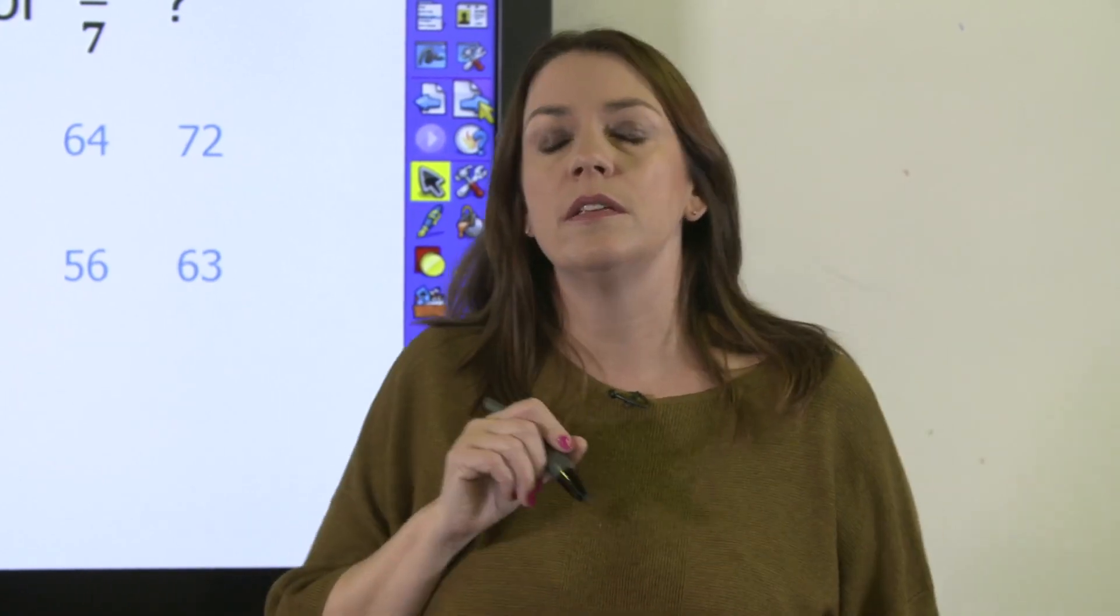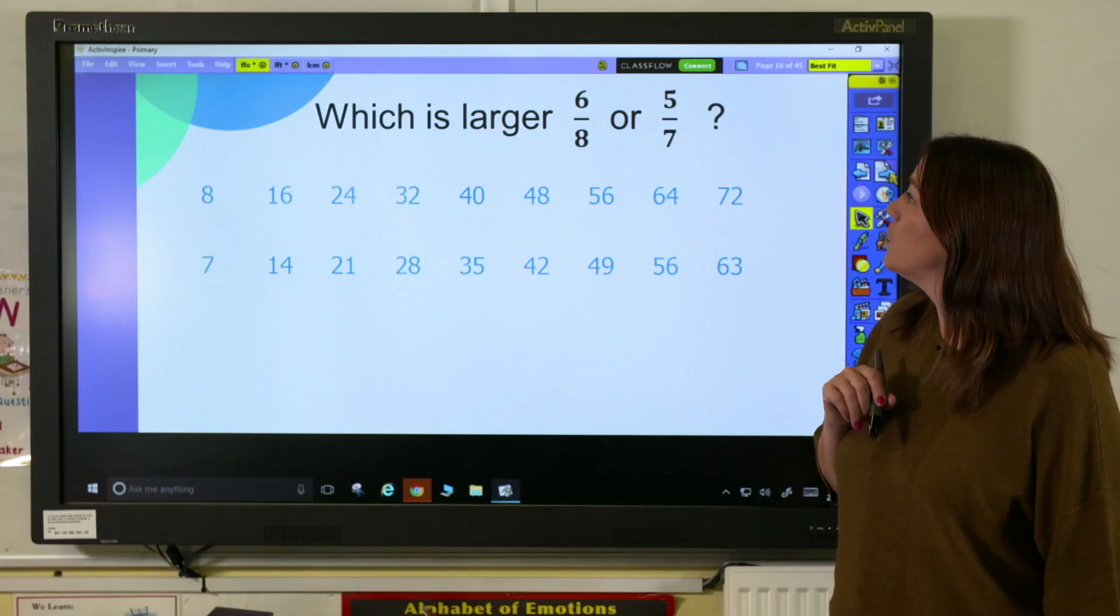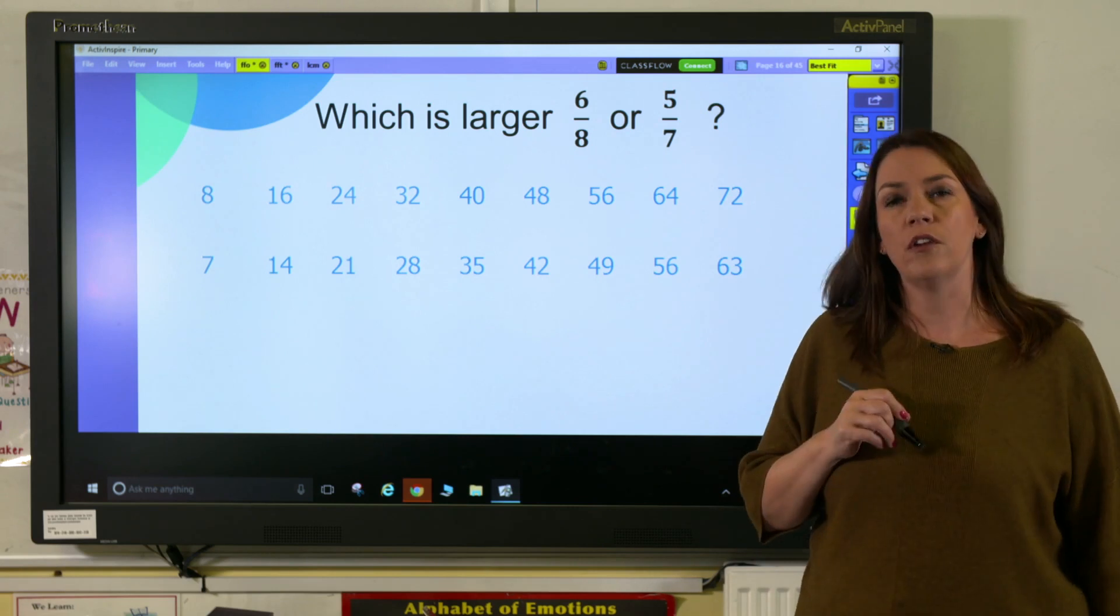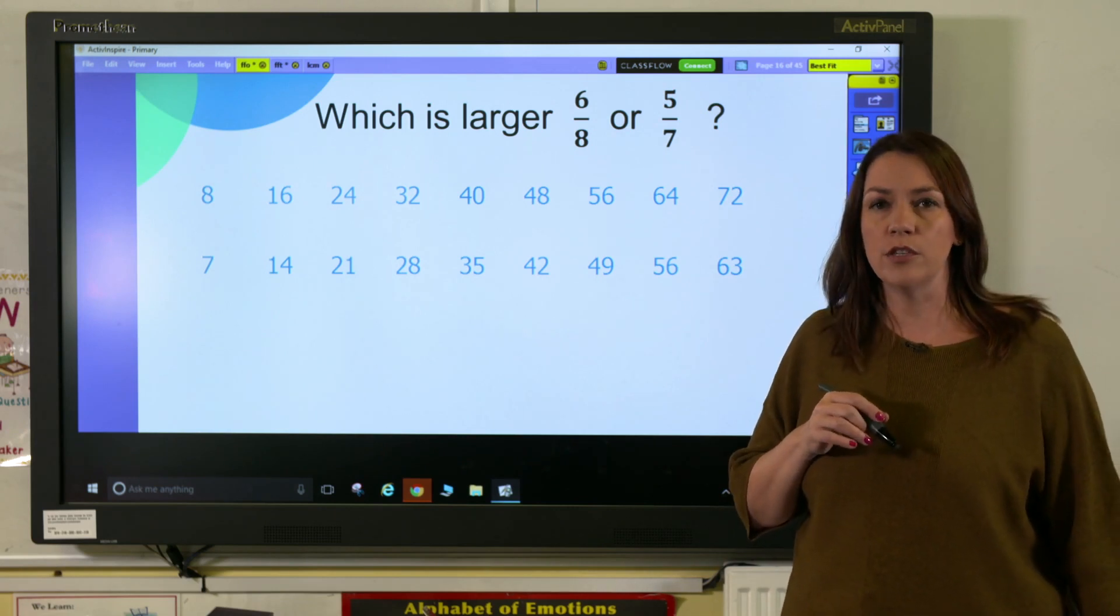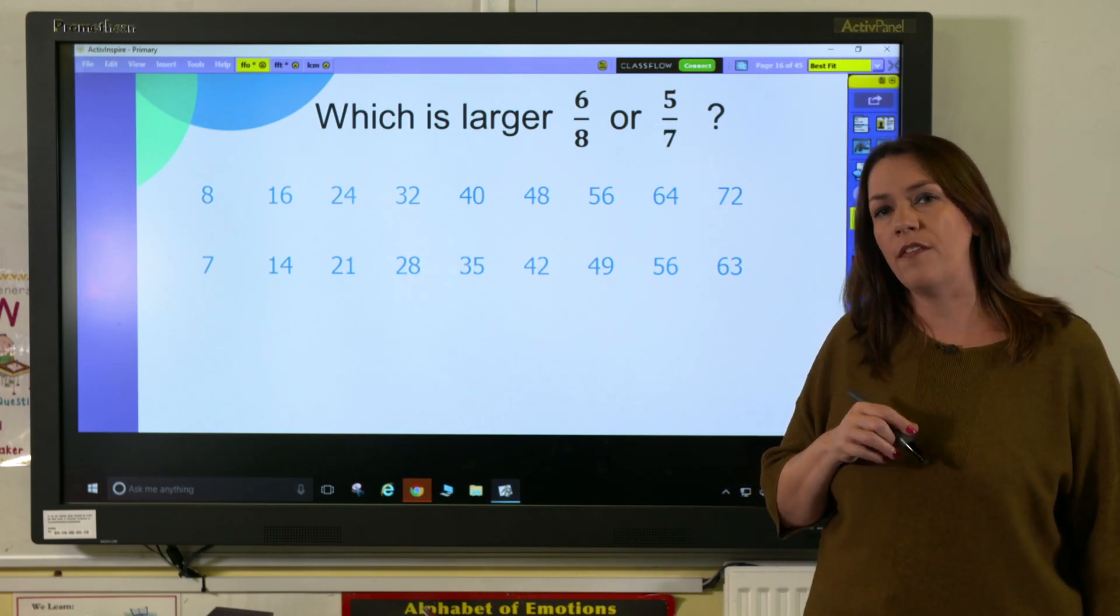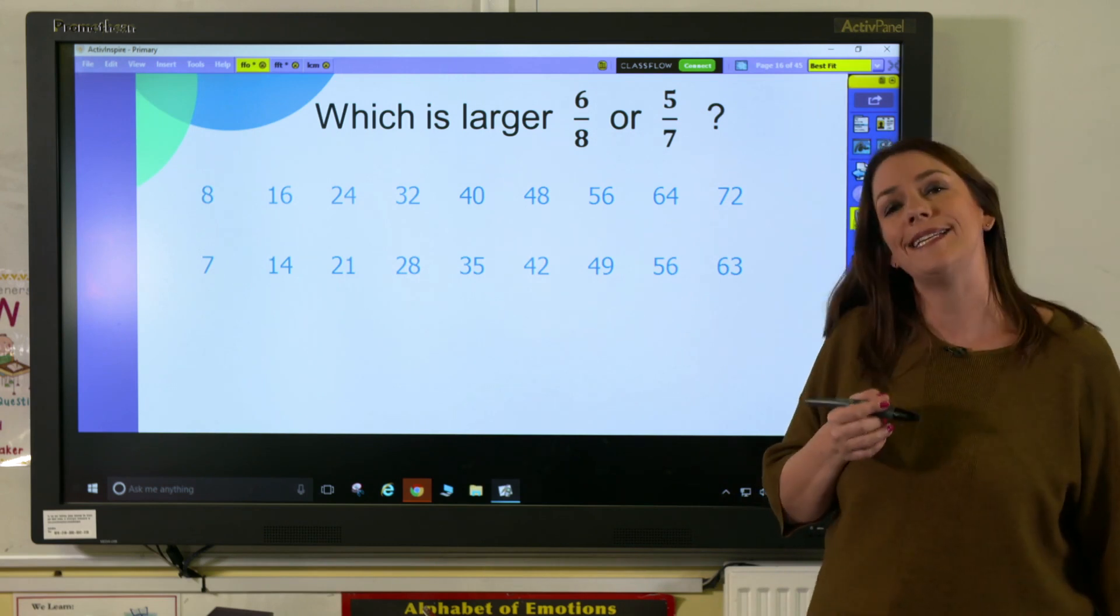We can also use this strategy to compare fractions. Here, we're asked what is larger, 6/8 or 5/7. But we need to have a common denominator to compare them, so we can find the lowest common multiple of 8 and 7.